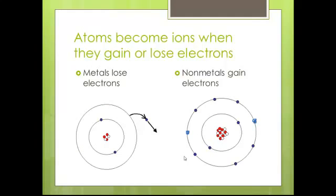Atoms become ions when they gain or lose electrons. Shown here, metals always lose electrons. Nonmetals always gain electrons.